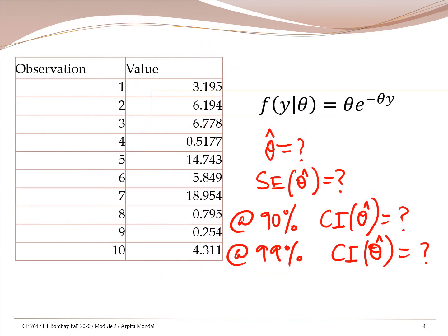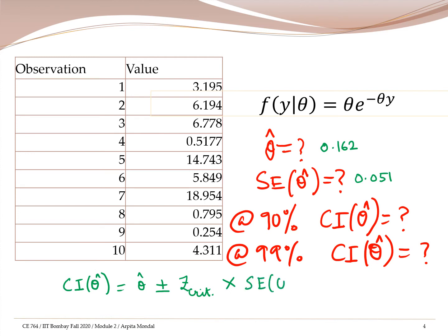We have calculated theta hat as 0.162 and the standard error of theta hat as 0.051. Now we use these to calculate the confidence intervals. The generic expression for the confidence interval is: the point estimate plus or minus the critical value times the standard error. We use the standard normal critical value Z_critical times the standard error of theta hat.